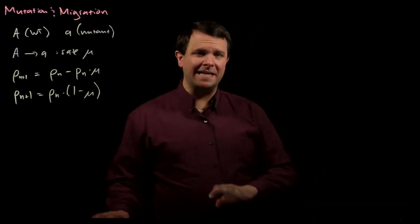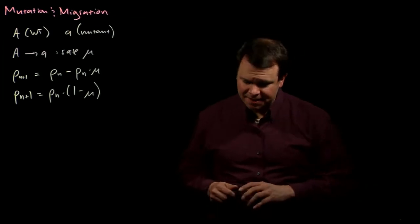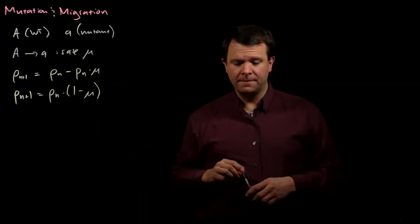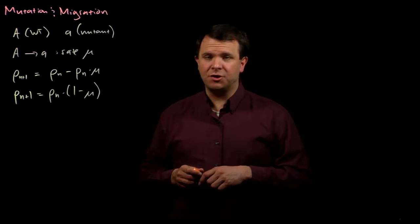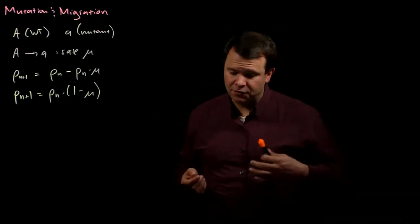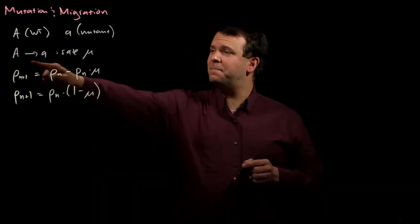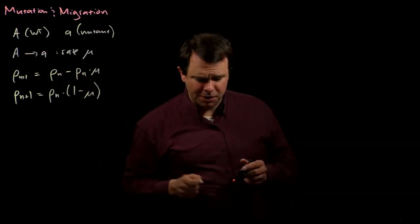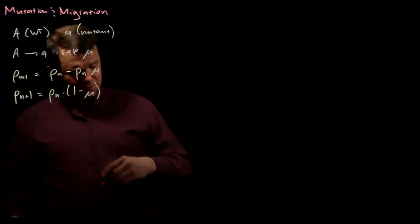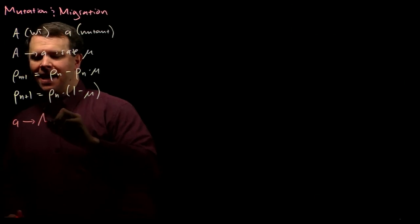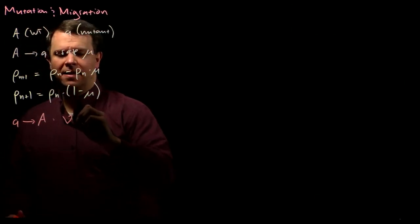And so, the other idea to consider in this is what if this mutation is reversible. The reverse mutation often occurs at a different rate. So, let's say that if the rate that big A mutates to little a is mu, then the rate of the reverse from little a back to big A is nu.